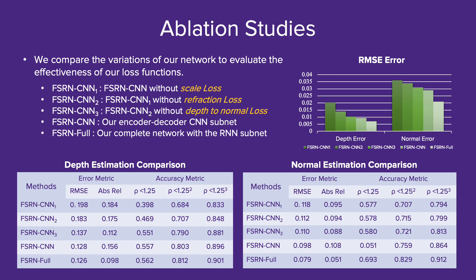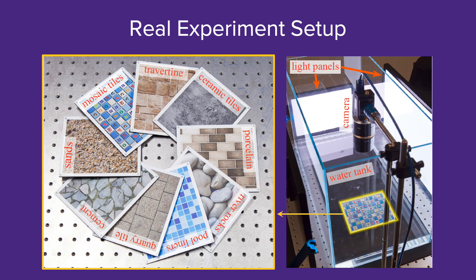We do ablation studies for verifying the importance of each of our loss functions and the recurrent layers. We see that our final version outperforms all the intermediate ones. We also perform real experiments to evaluate our network. Here shows our experimental setup and reference pattern. Our water is around 10 cm deep. We place a reference pattern at the bottom and mount a camera on top to record videos of water waves.